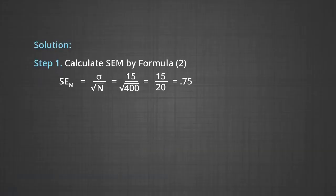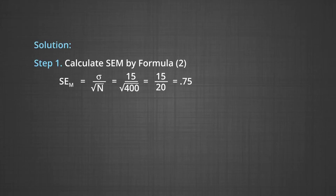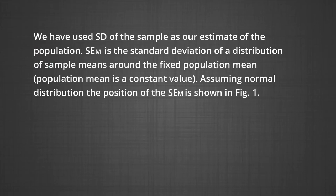With the help of an example, I am going to show you the calculation of SEM using formula 2. We assume the value of standard deviation to be 15 and the value of n equal to 400. Substituting the values in the formula, we have 15 divided by the square root of 400, which gives the final value of 0.75. We have used the SD of the sample as our estimate of the population sigma. SEM is the standard deviation of the distribution of sample means around the fixed population mean. Assuming normal distribution, the position of SEM is shown in figure 1.